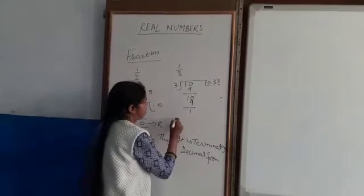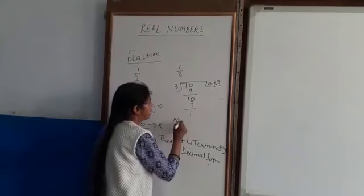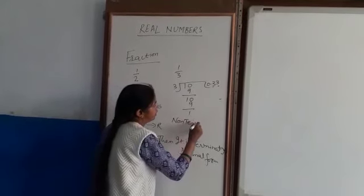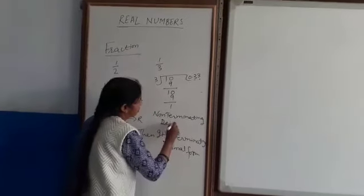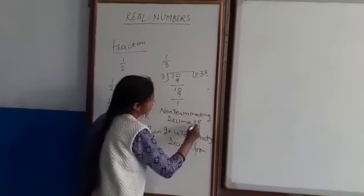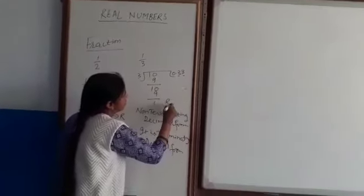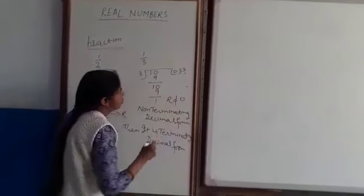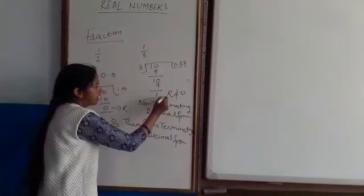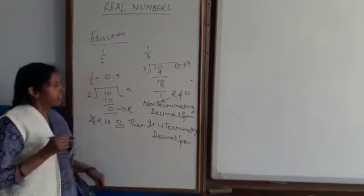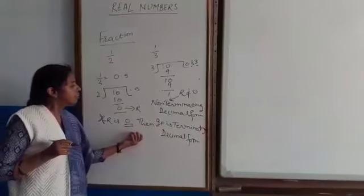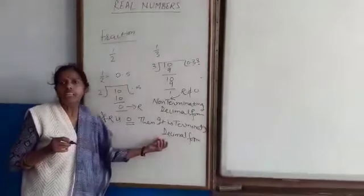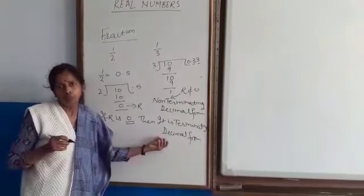Non-terminating decimal form. When we get this? When remainder is not equal to 0. It means, when R is not equal to 0, then it is non-terminating decimal form. And when R is equal to 0, it is terminating decimal form.